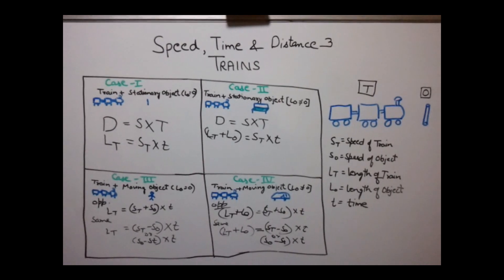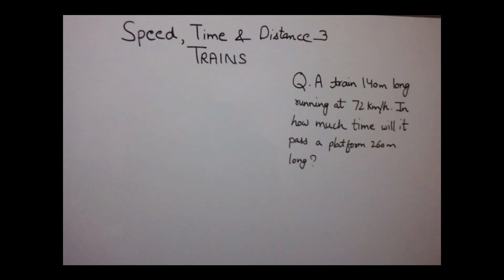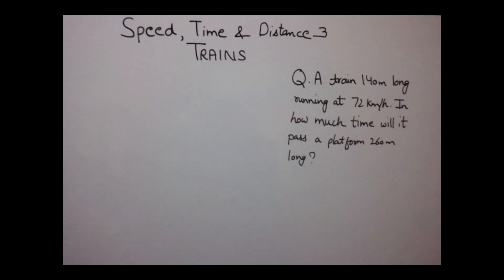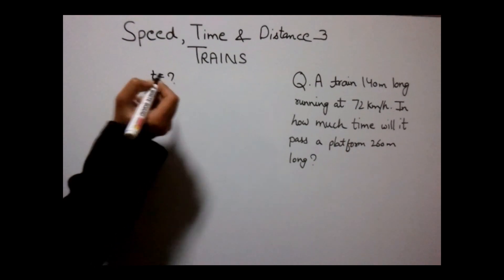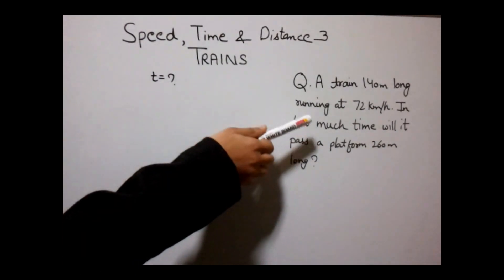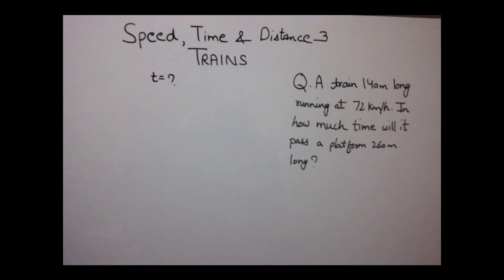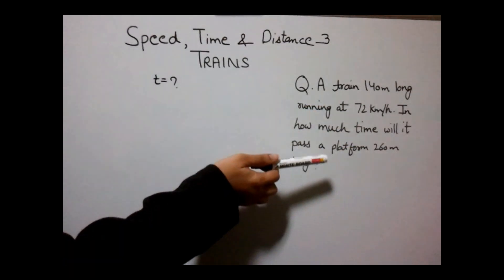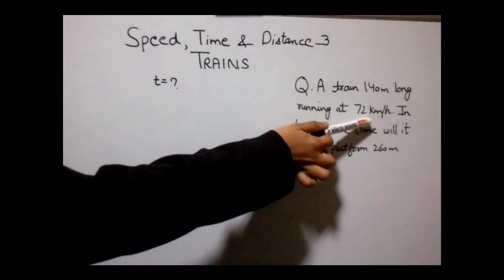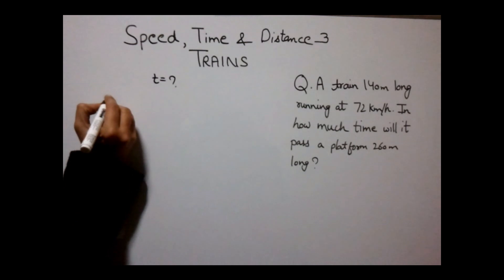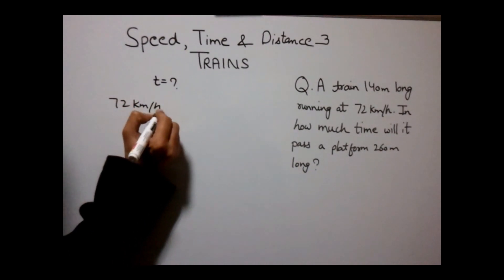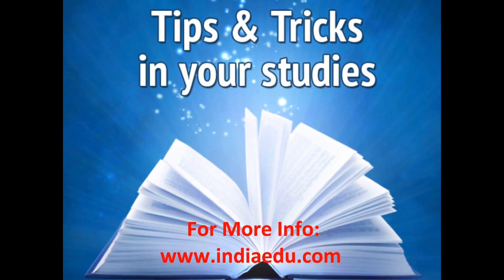Now let's solve some examples on these concepts. A train 140 meters long running at 72 km per hour — in how much time will it pass a platform 260 meters long? We need to find the time. First, we notice that different units are used: distance is in meters while speed is in kilometers per hour. So we need to convert all units to a common one. Let's convert 72 km per hour into meters per second.